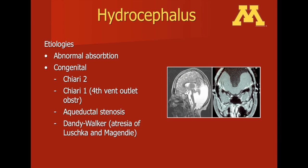Dandy-Walker syndrome occurs when you have atresia of the foramen of Luschka and the foramen of Magendie — both of which communicate from the fourth ventricle to the subarachnoid space. Here on the right you can see this condition, called Dandy-Walker, and it has a characteristic bat-type shape, as seen in the image on the far right.